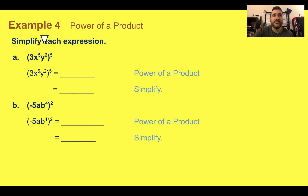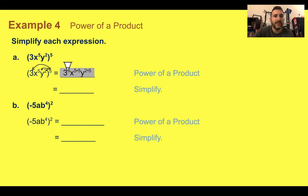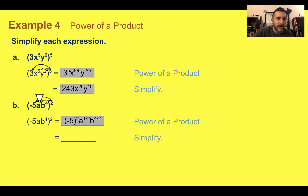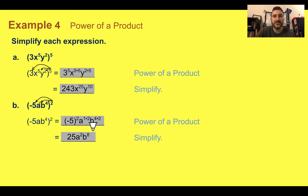Example four, power of a product — simplify each expression. First, we have (3x to the fifth, y to the second) all raised to the fifth power. Distributing the exponent: 3 to the fifth, x to the five times five, and y to the two times five. Three to the fifth is 243, five times five is 25, two times five is 10. So the simplified expression is 243x to the twenty-fifth, y to the tenth. For the next one, distributing the 2 to each term, we get negative 5 to the second, a to the hidden one times two, and four times two. Negative 5 times negative 5 is positive 25, one times two is two, four times two is eight. So the result is 25a squared to the eighth.